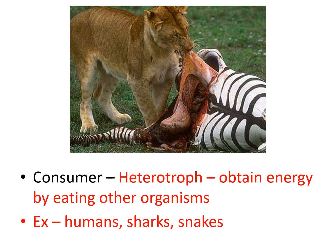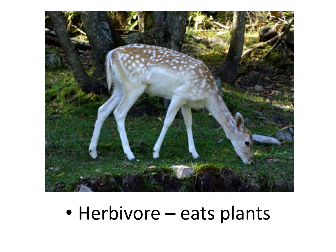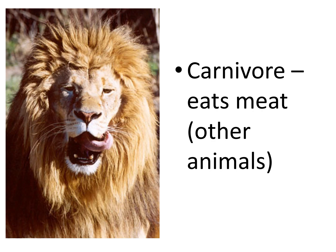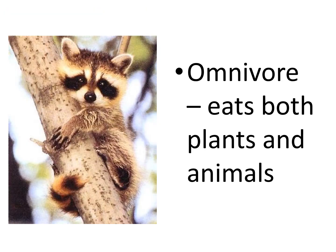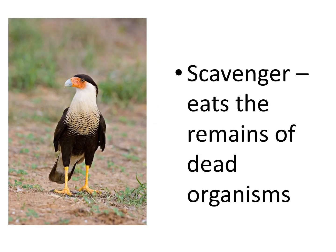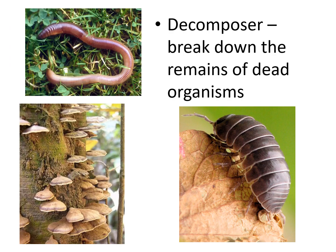Consumers are heterotrophs. Heterotrophs have to eat other organisms — here you have a picture of a lion eating a zebra. A herbivore eats plants, a carnivore eats meat or other animals, an omnivore eats plants and animals — we are omnivores. A scavenger eats something that's already dead that they have found. And decomposers break down the remains of dead organisms — they're kind of like the recyclers of the world.